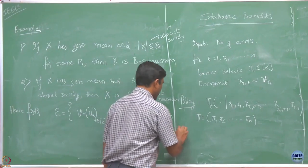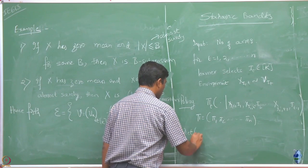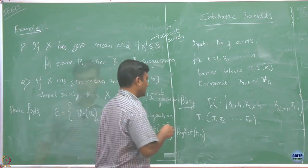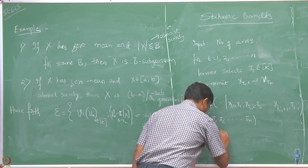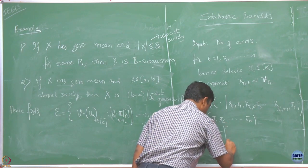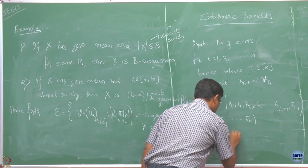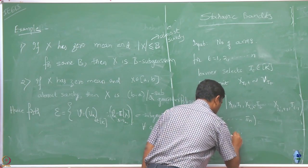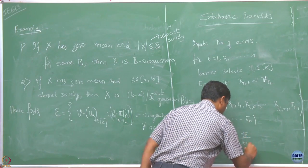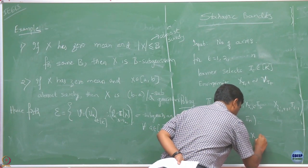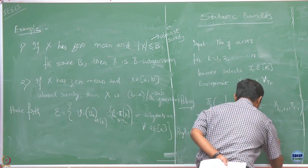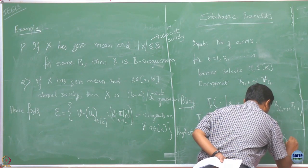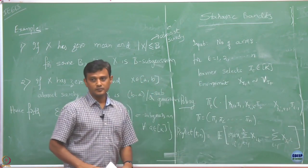We defined our regret for a policy pi over n rounds. The regret is defined for t = 1 to n rounds. If you play over t rounds and always happen to play the i-th arm, that is the cumulative reward you get.